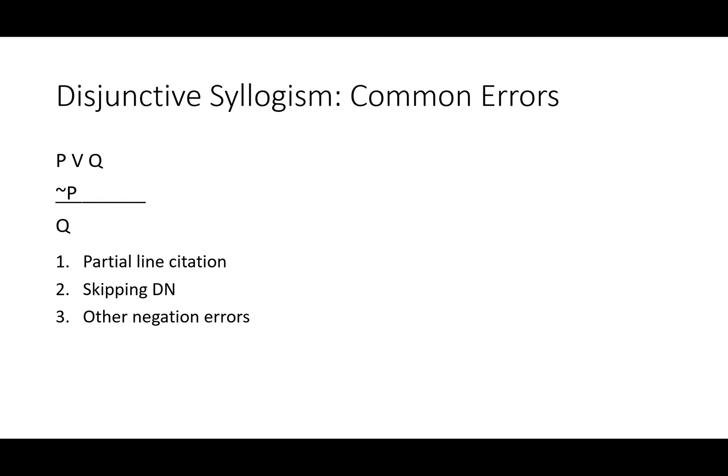There's a few different kinds of errors that are pretty common with this rule. First is a partial line citation. You might be really tempted to do this, and I'm pretty sure it follows, but it's not how the rule works. If P, then either Q or R. Not R. Therefore, if P, then Q. This is an inference that you should be able to make, but you're going to need quite a few more steps, simply because disjunctive syllogism is not set up to work on partial lines. These rules are made to be as general as they can, and it's not going to work on every partial line. For that reason, it doesn't work on any.